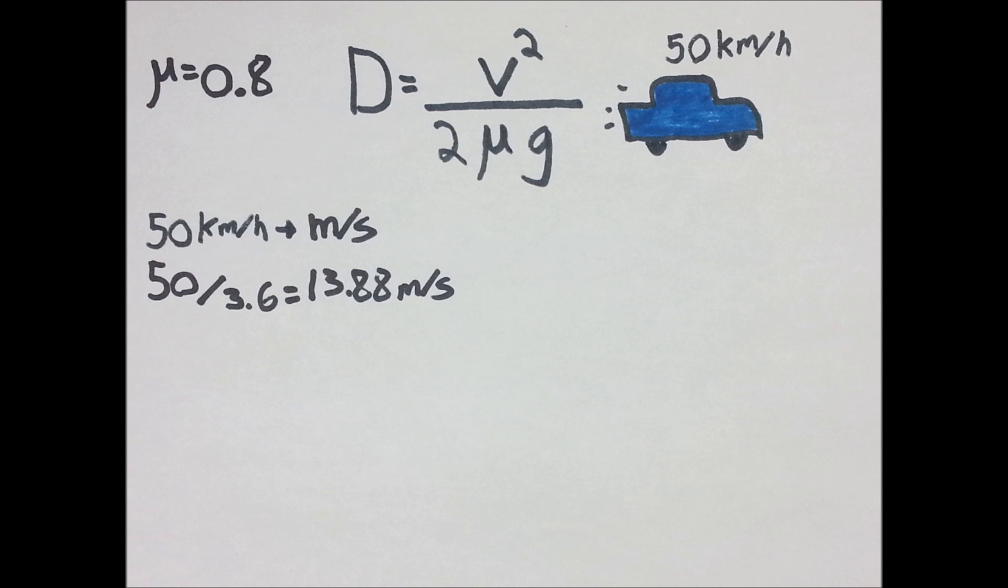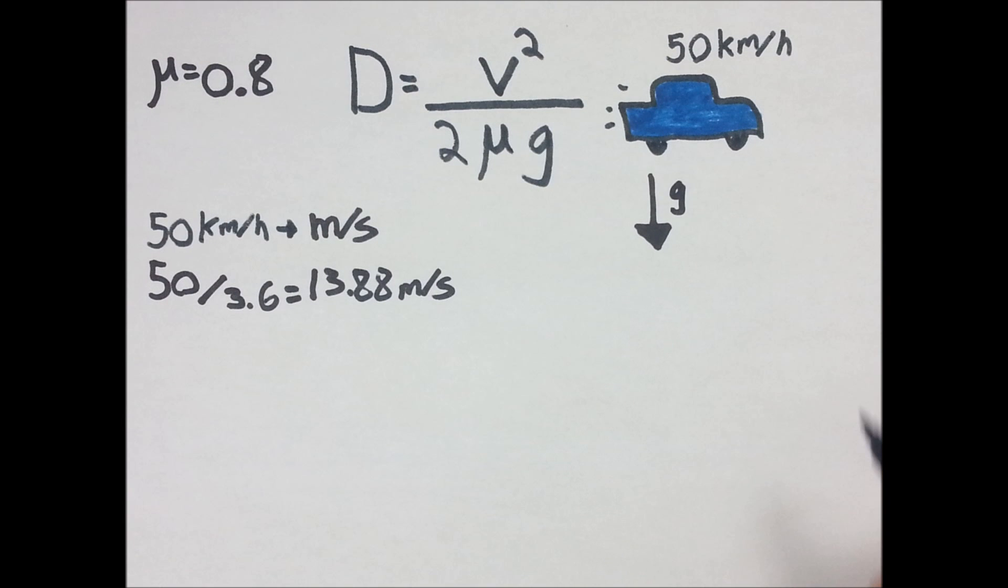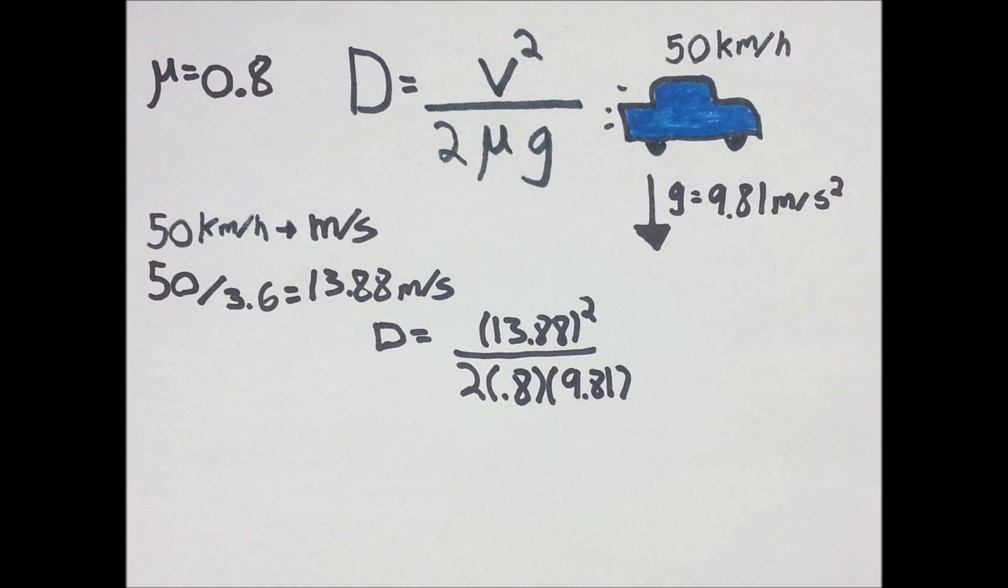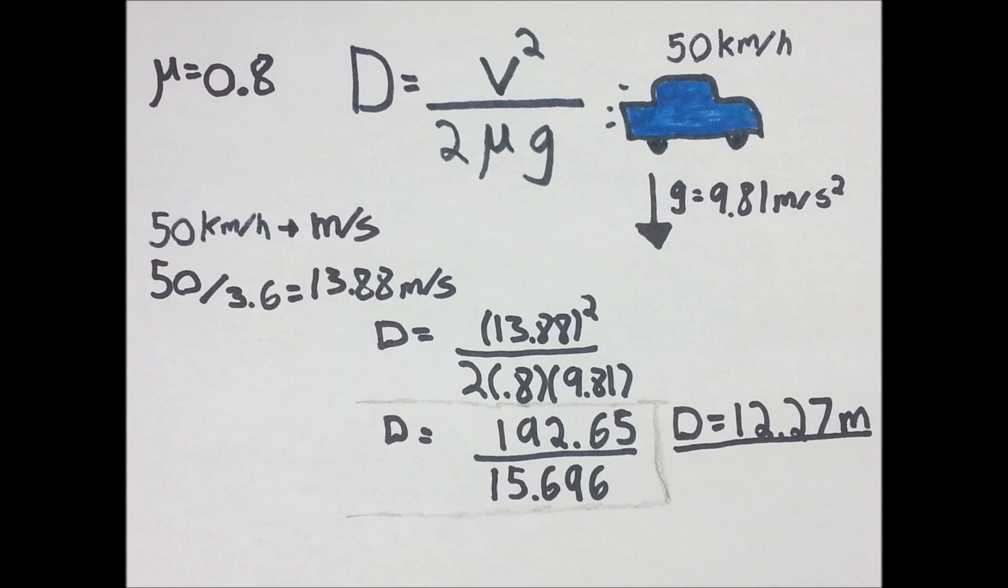The coefficient of friction of rubber on dry cement is 0.8. And since we live on Earth, the acceleration due to gravity is 9.81 meters per second squared. After solving for D, we found out the answer is 12.27 meters.